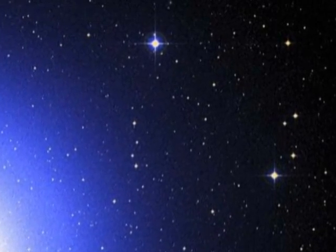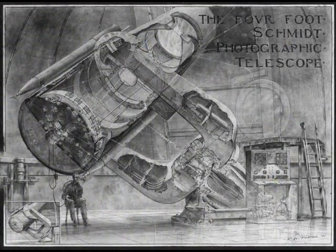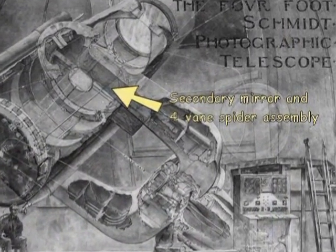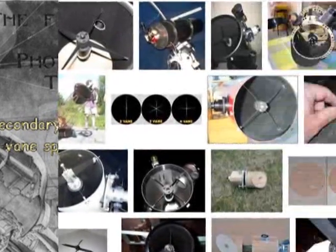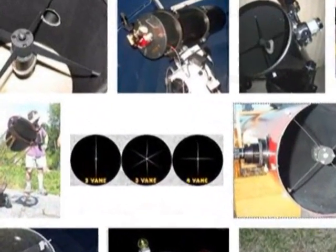Now let's take a look at the inside of a reflecting telescope. In this drawing you can see the four veins, or brackets, that hold the secondary mirror in place. This is also known as a spider assembly. Here are some more examples of four vein spiders.